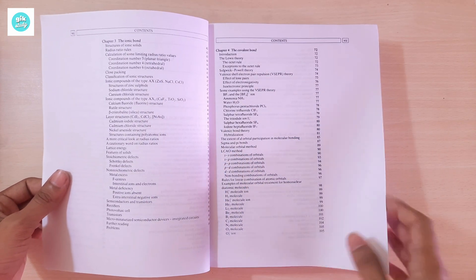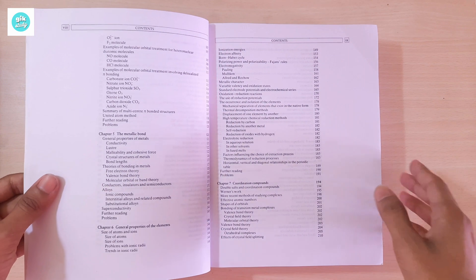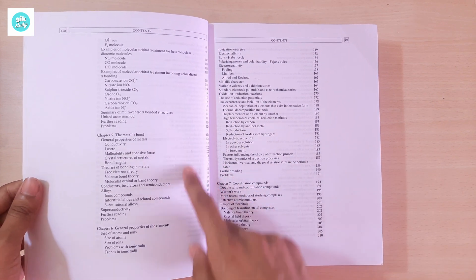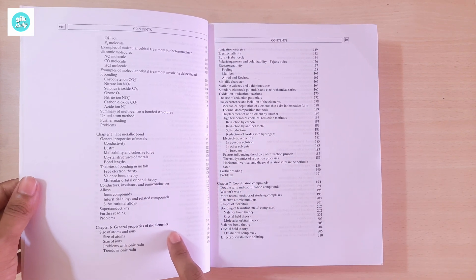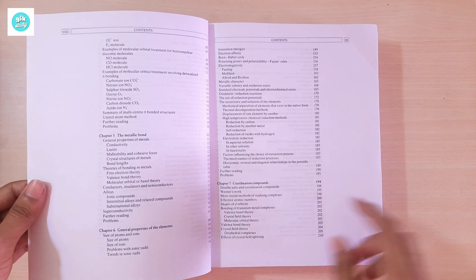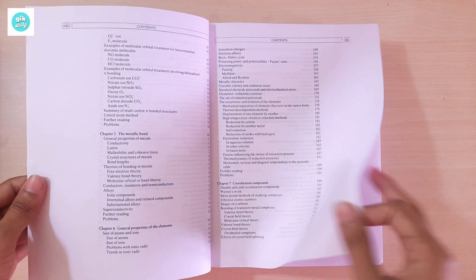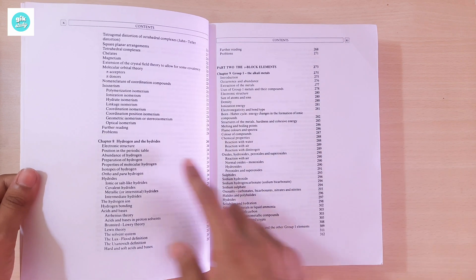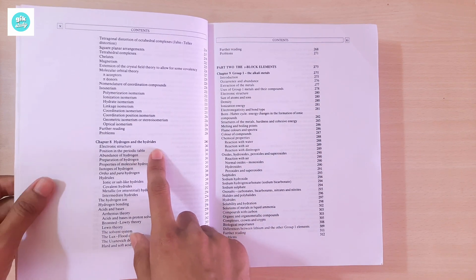Chapter 4: The Covalent Bond. Chapter 5: The Metallic Bond. Chapter 6: General Properties of the Elements. Chapter 7: Coordination Compounds. Chapter 8: Hydrogen and Hydrides.